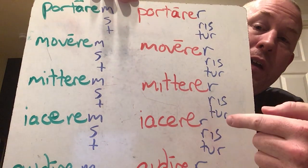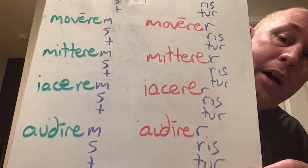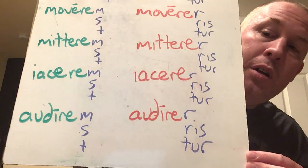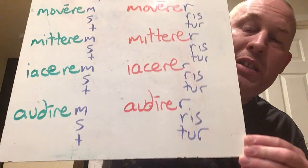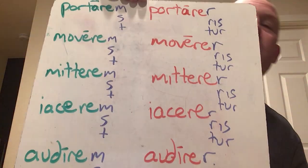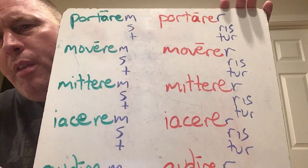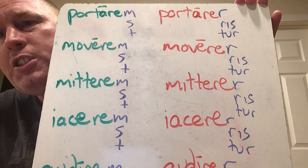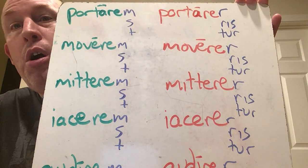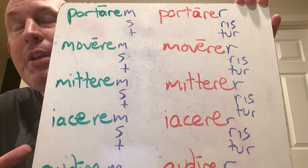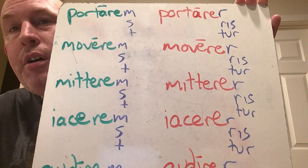Mitterer, mittereris, mitteretur, and on and on. It's the same thing over and over again. So it's very, very simple. This is probably why the book taught you these first, because they really are the easiest to conjugate. And they do look like somebody conjugated them way wrong — they look like somebody forgot step two of knocking off the RE.